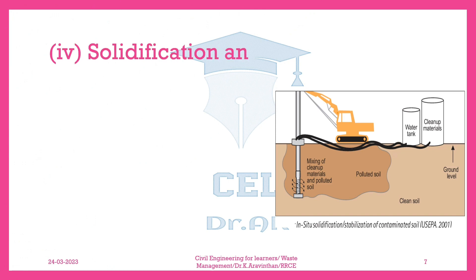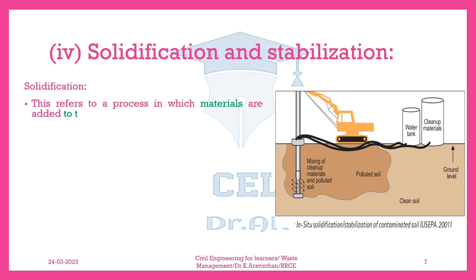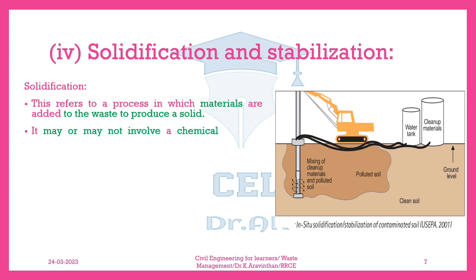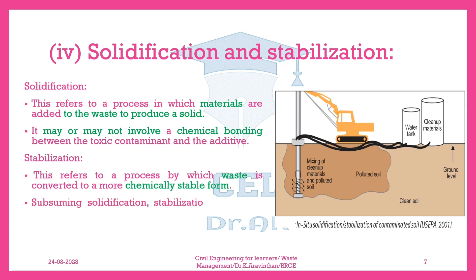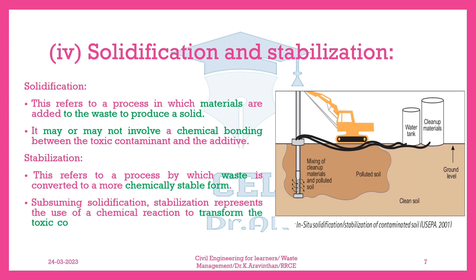Solidification and stabilization. Solidification refers to a process in which materials are added to the waste to produce a solid. It may or may not involve a chemical bonding between the toxic contaminant and the additive. Stabilization refers to a process by which waste is converted to a more chemically stable form. Subsuming solidification, stabilization represents the use of a chemical reaction to transform the toxic component into a new, non-toxic compound or substance.